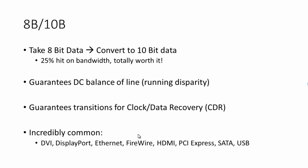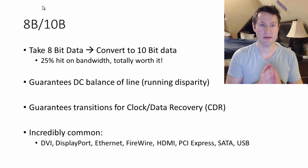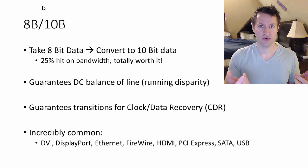8b10b encoding takes eight bits of data, so a byte, and converts it to 10 bits of data, which is an immediate hit to your total bandwidth right off the top, because now you need to send two extra bits to get eight—you send 10 bits to get eight bits. But it's totally worth it in the long run. The reason why it's worth it is because it guarantees a few things.